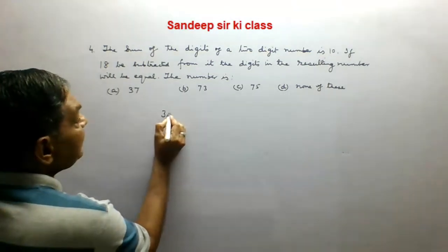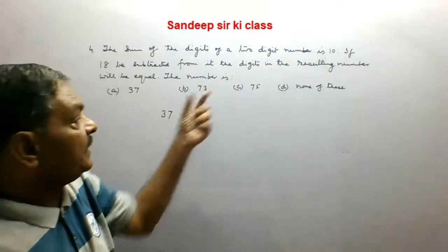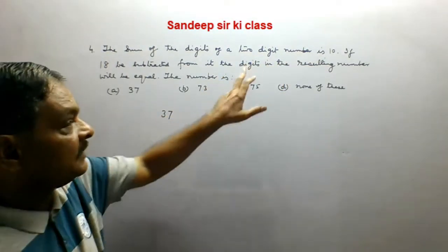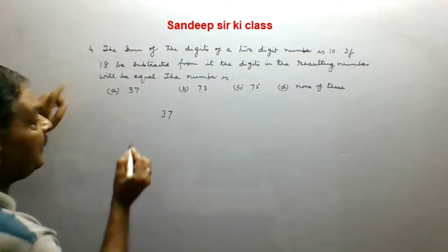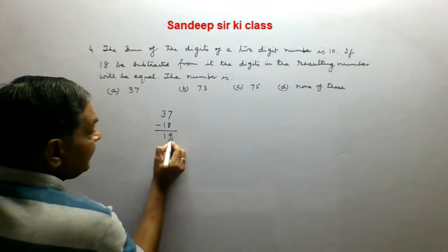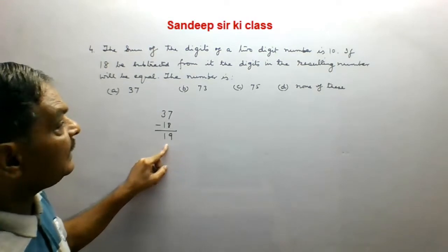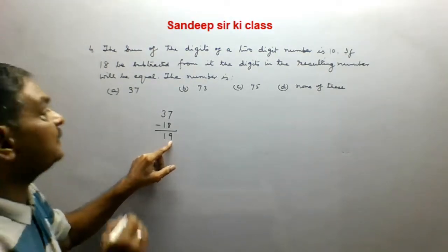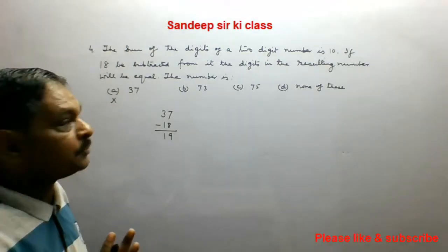37 is a two-digit number. The sum of the digits is 3 plus 7, which is 10 — this is okay. Now if 18 is subtracted from it, we obtain 19, and surely the resulting number 19 does not have equal digits. So option A is not the correct option.